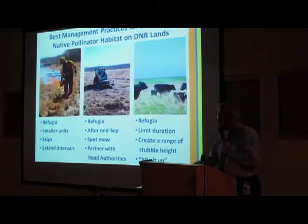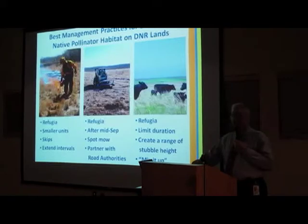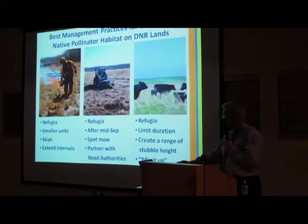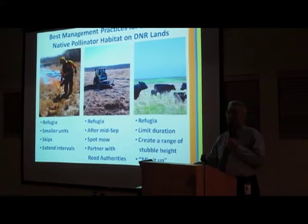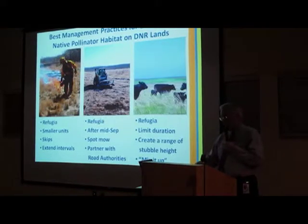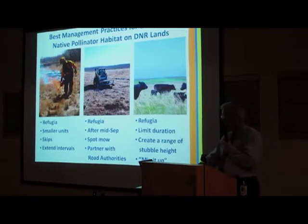We're just now starting to use grazing in grassland management to create diversity. The key is providing for refugia — you'll see that theme throughout. As we treat lands, we're asking managers to mix things up and create refugia: areas not treated in a given year, so pollinators can repopulate treated areas. In grazing, that means creating a range of stubble heights and resisting the urge to do what's easy and comfortable year after year.